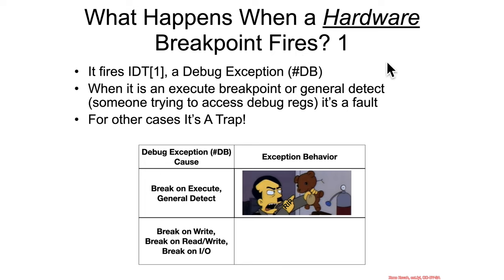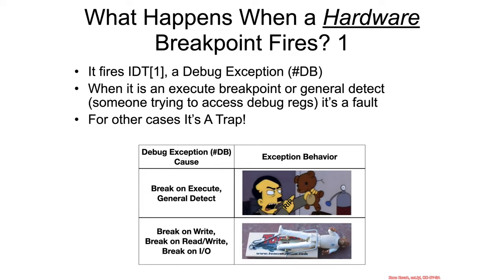Whenever it's an execute breakpoint or a general detect breakpoint — meaning there was the GD bit, which is when someone does a move instruction trying to write to the debug registers — it is going to be treated as a fault. So break on execute or general detect is a fault, with RIP pointing at the faulting instruction.